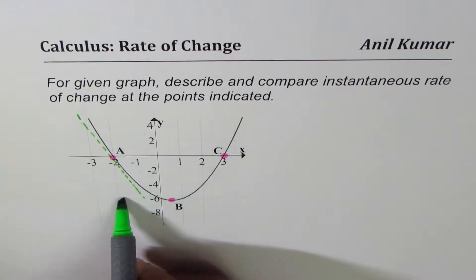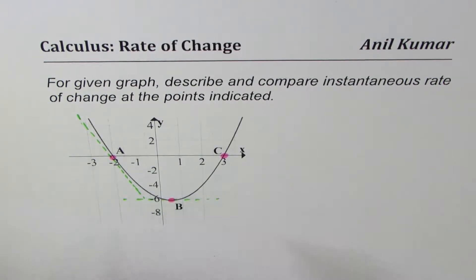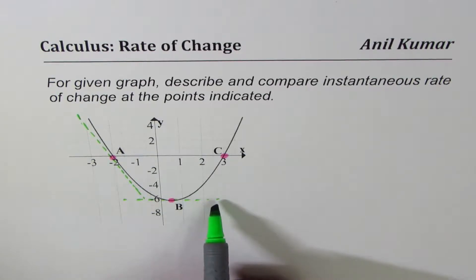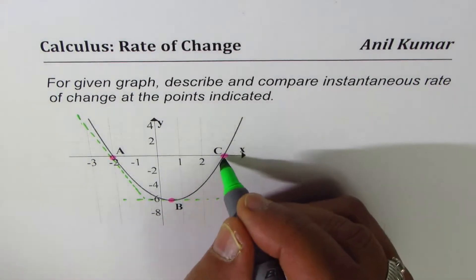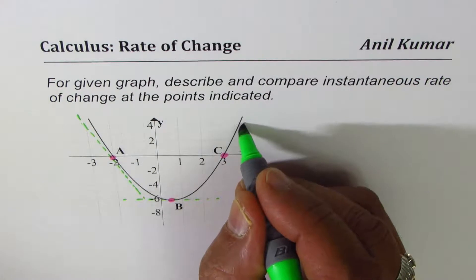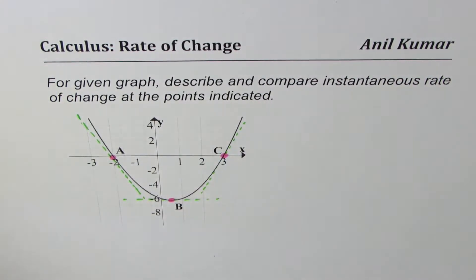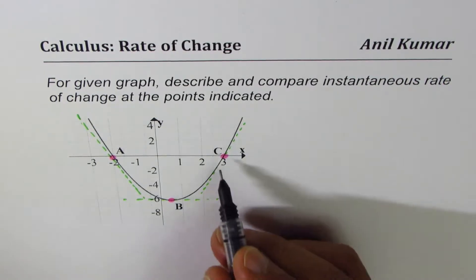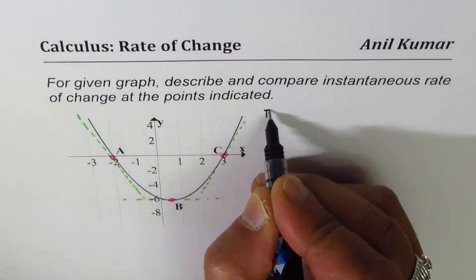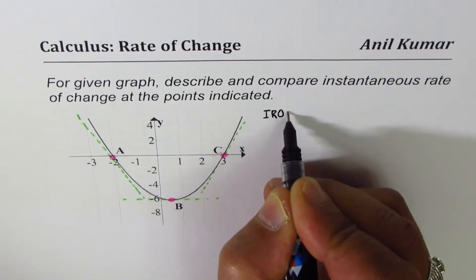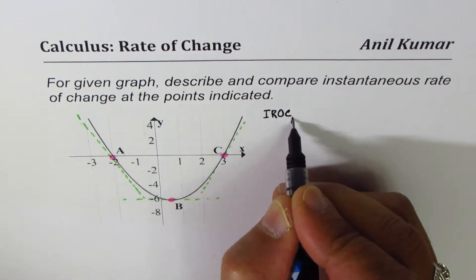Similarly, we draw a tangent at B — the slope of that line gives us the instantaneous rate of change at B. A tangent at C gives us a line whose slope will provide the instantaneous rate of change at C. So let's find what the instantaneous rate of change is at each point.